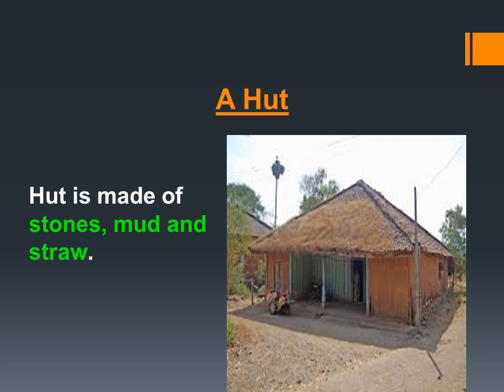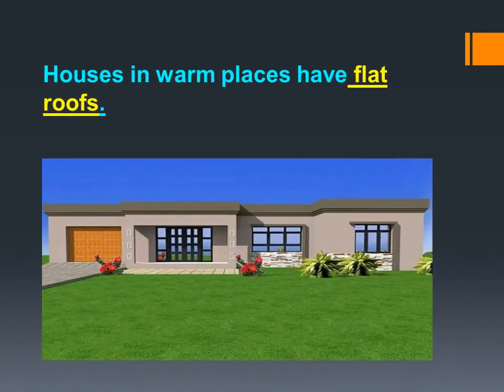Houses in warm places have flat roofs. Warm means places that get more sunlight and less cool. In those places the upper portion of the house — the roof — is flat. As you can see in the picture, in a warm place the roof of the house is flat.